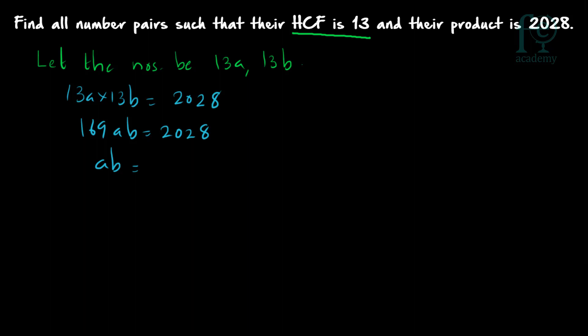So AB = 2028 ÷ 169, which gives you 12. Now you have the product AB = 12. You want to find out the values of A and B. You have to find the pair of co-prime numbers whose product is equal to 12. Co-prime means they should not have any common factor other than 1, which is a common factor for all pairs of numbers.